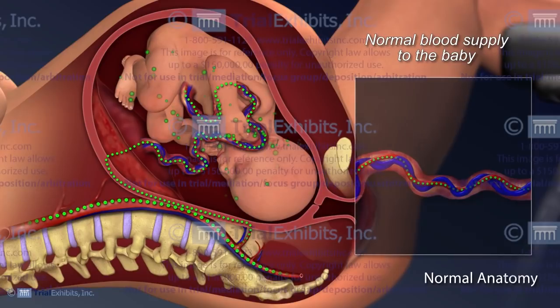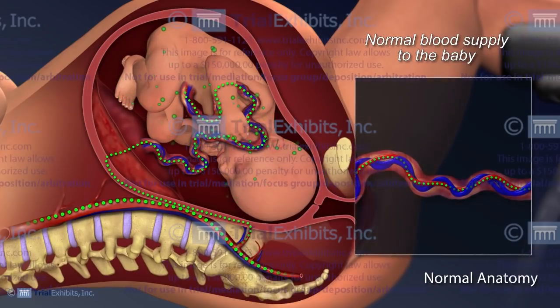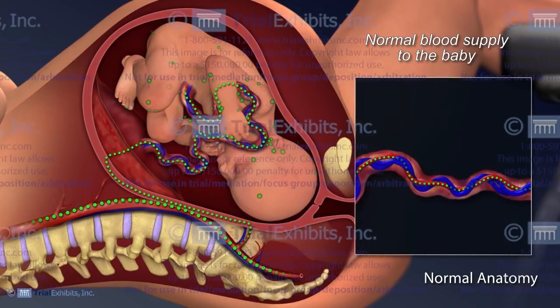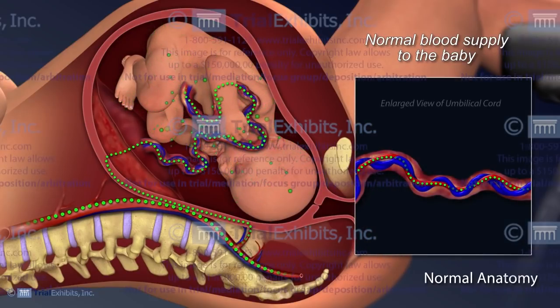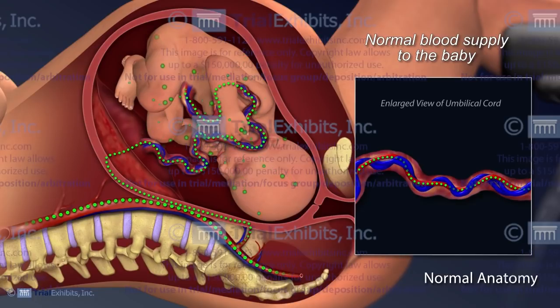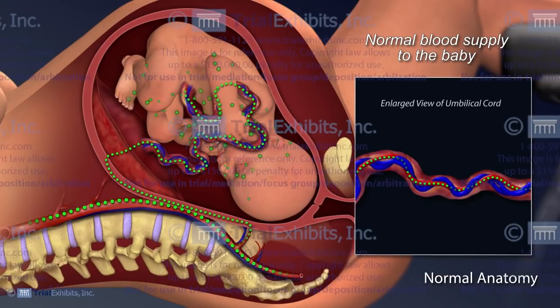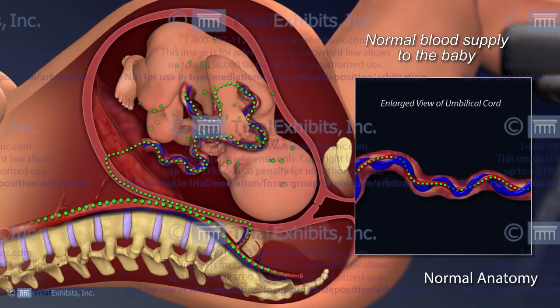First, it was necessary to create an animation of fetal oxygenation showing the importance of the umbilical cord in carrying oxygen from the mother and the placenta to the fetus in utero.